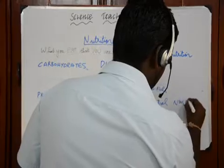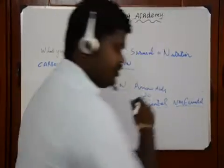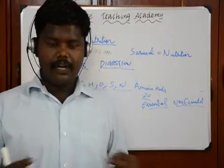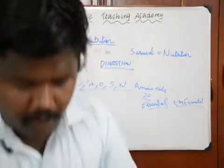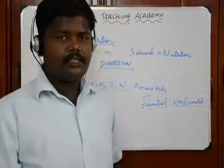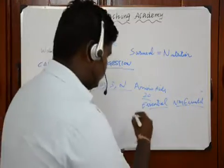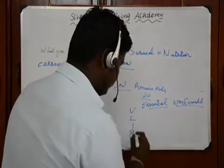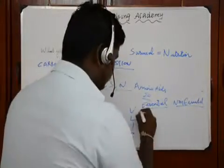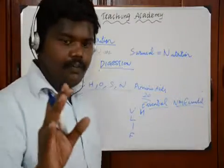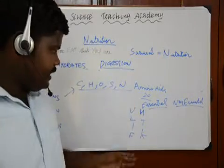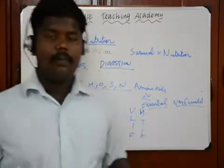Essential amino acids cannot be synthesized by our body, so they must be supplied through diet. The 10 essential amino acids important for competitive exams are: valine, leucine, isoleucine, phenylalanine, methionine, tryptophan, and lysine, among others. These are represented by one-letter codes in biochemistry.